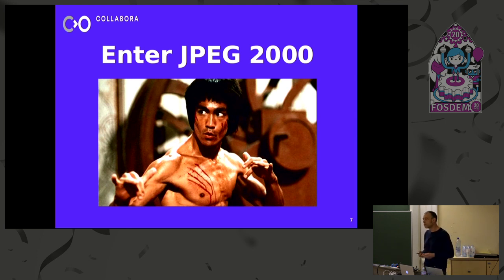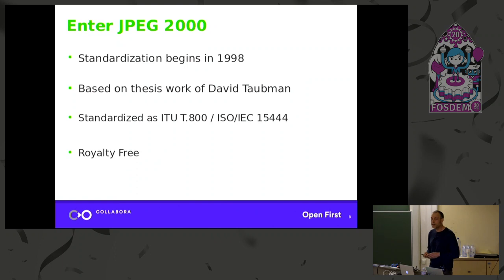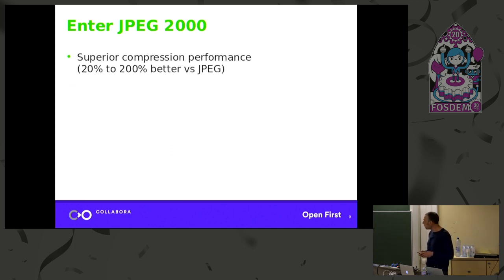But it also added a whole bunch of new features. So only six years after JPEG was standardized, they began to standardize JPEG 2000. It was based on the work by David Taubman, his thesis work. Those are the monikers for the ITU and ISO standards. And it is royalty-free. Taubman actually donated his IP so that he would make sure that it was a royalty-free codec.